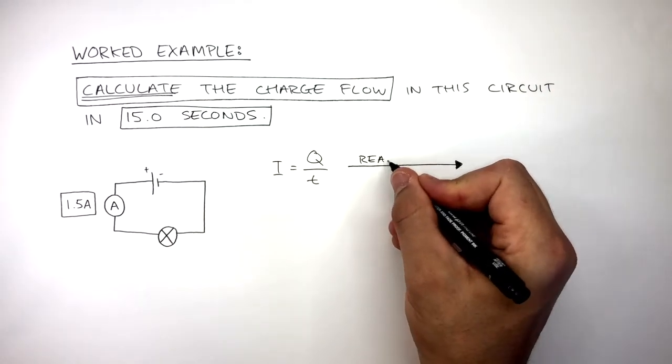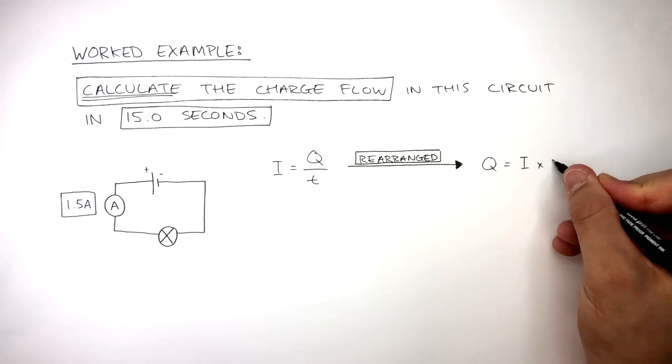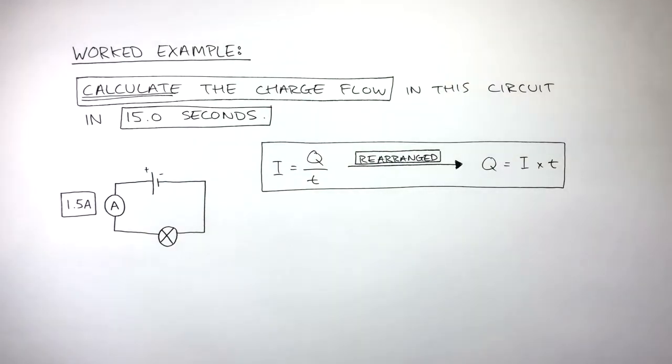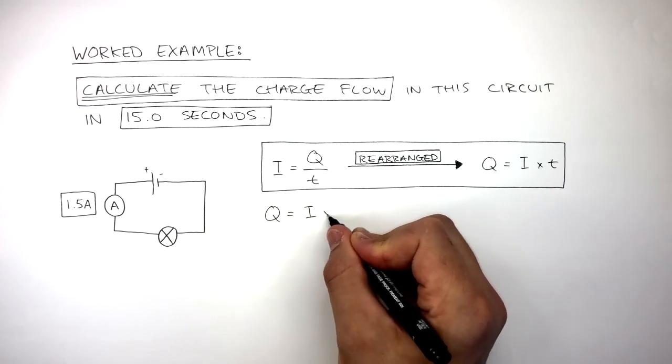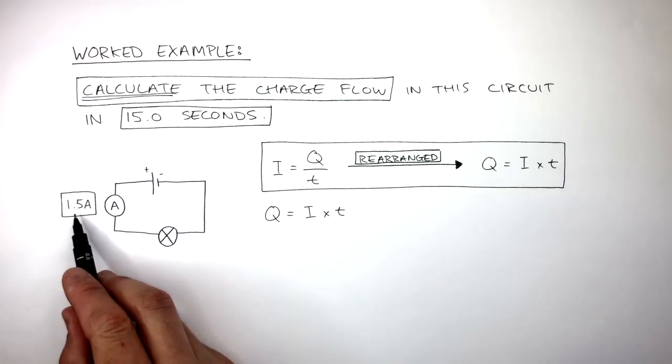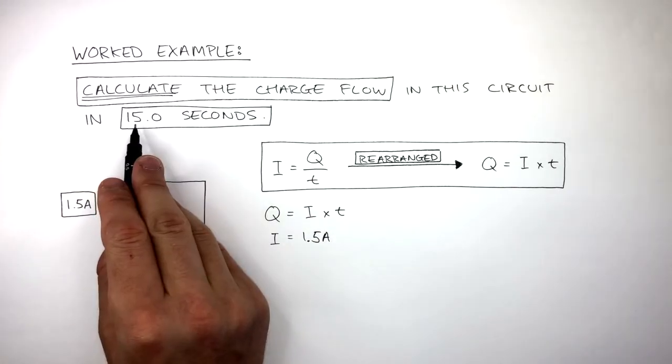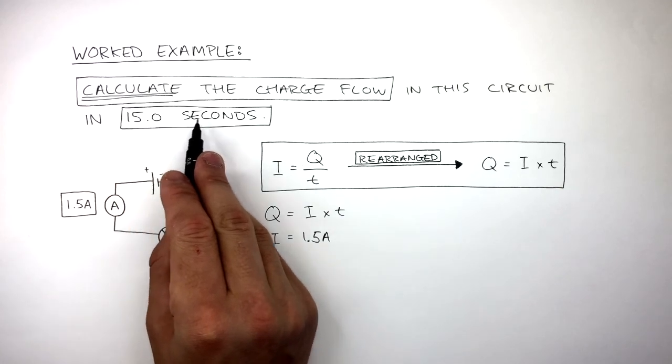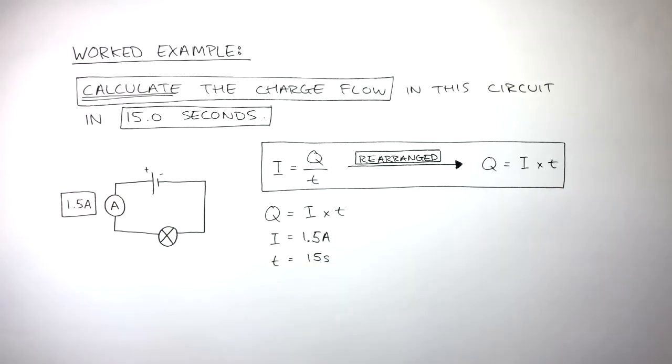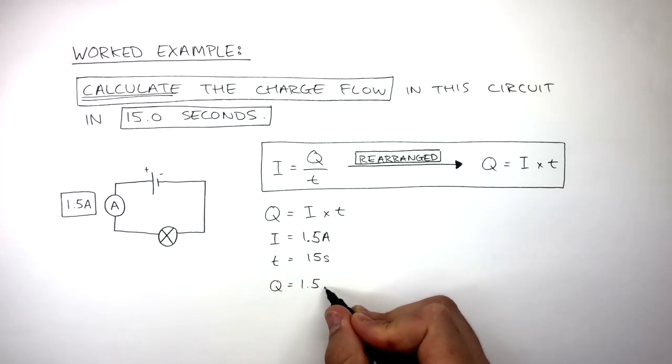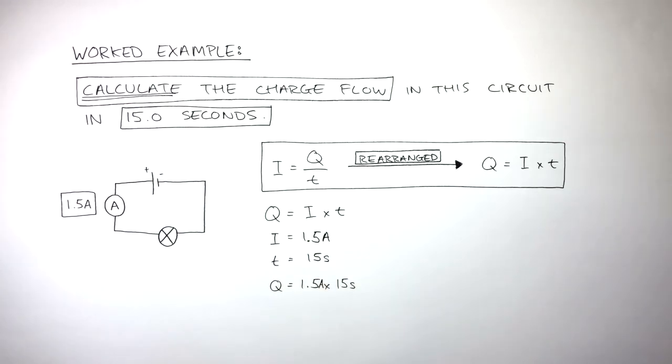We already know the equation to calculate current is I equals Q over T. As charge flow is being calculated, this equation is rearranged into Q equals I times T. The ammeter reading tells us I equals 1.5 Amps. In the question we're given the information it takes 15 seconds, so T equals 15 seconds. Inputting this information into the equation: Q equals 1.5 Amps times 15 seconds.